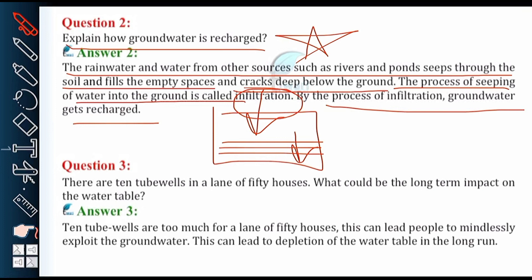The rain water and water from other sources such as rivers and ponds seeps through the soil and fills the empty spaces and cracks deep below the ground. This process of seeping of water into the ground is called infiltration, and by this process, ground water gets recharged.